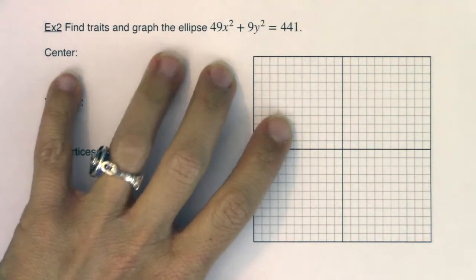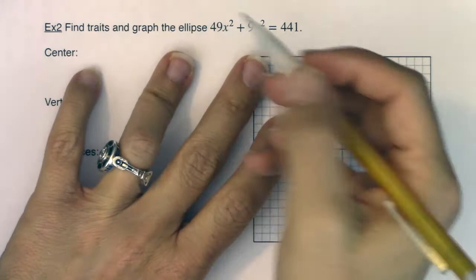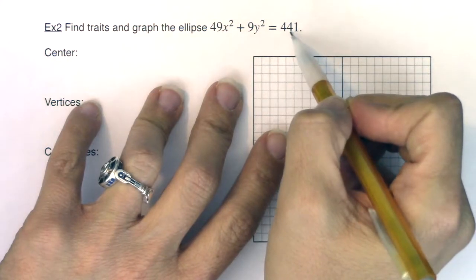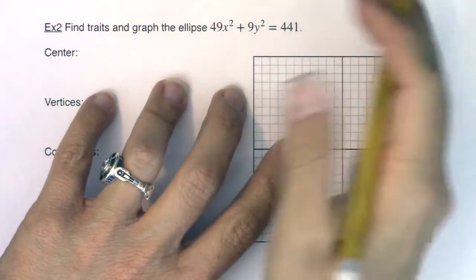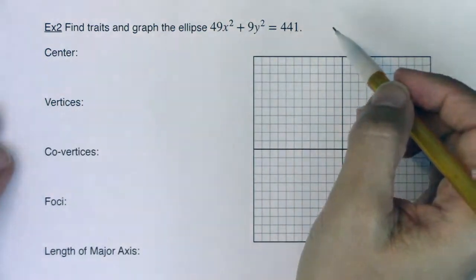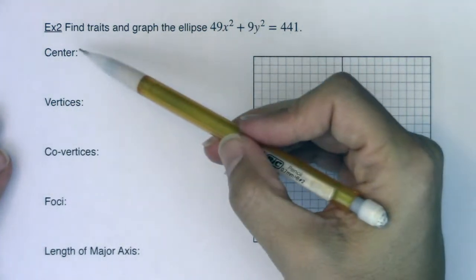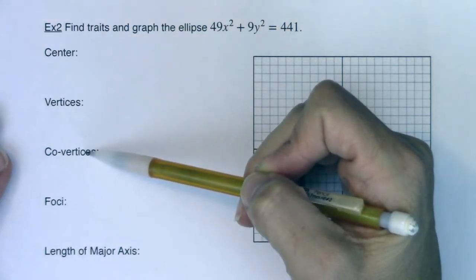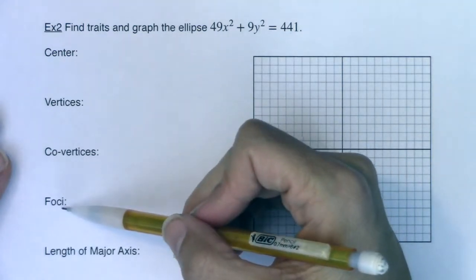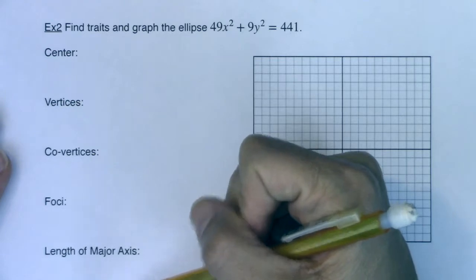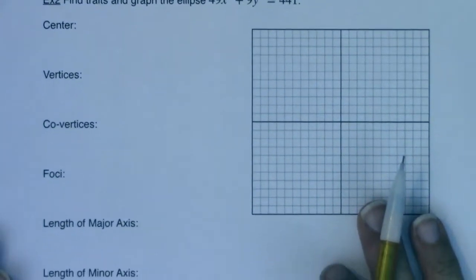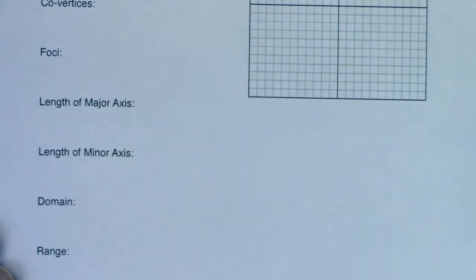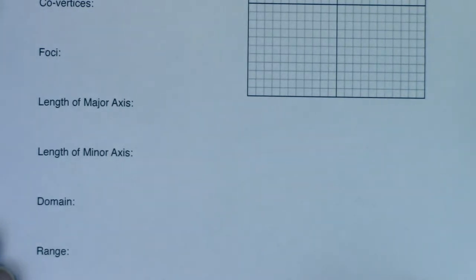We're going to find traits and graph this ellipse. Now if I take a look at this formula, it's not in standard form because the right side of this equation is not equal to one. It's equal to 441. In a moment I'll fix that, but take a look at all of the traits that you're responsible for. We're going to find the center, the vertices, the co-vertices, or sometimes referred to as the indices, the foci, the lengths of the major axis, the lengths of the minor axis, and then we've got domain and range.